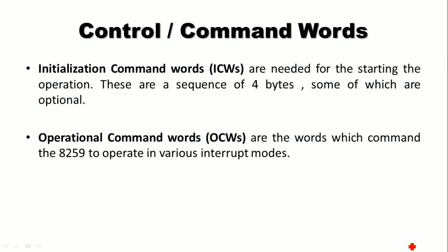The control and command words of the 8259 PIC are given as Initialization Command Word and Operational Command Word. The Initialization Command Word, shortly called ICW, is needed for starting the operation of 8259 PIC. These ICWs are a sequence of four bytes, some of which are optional. The Operational Command Word, shortly called OCW, is used to command the 8259 PIC to operate in various interrupt modes.